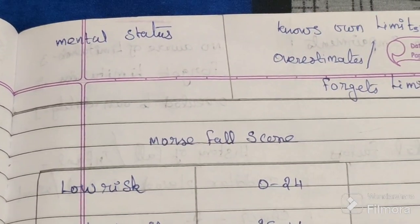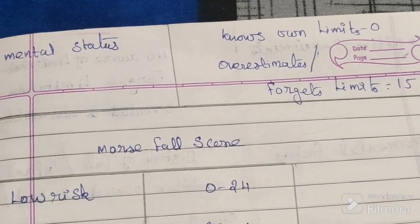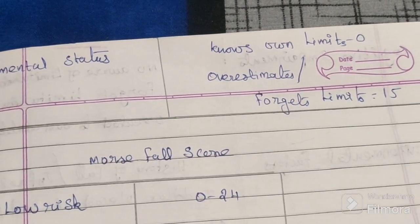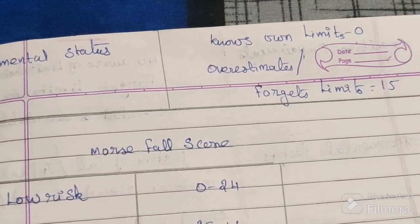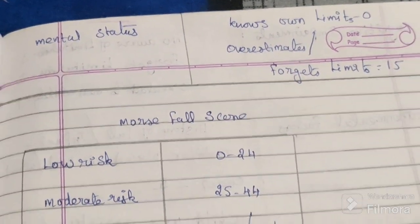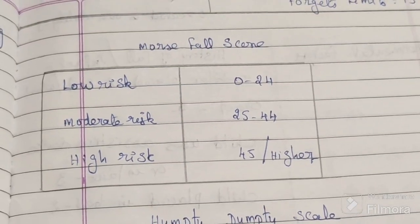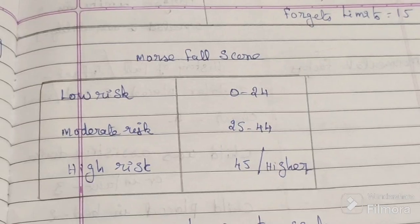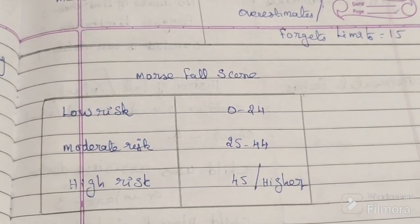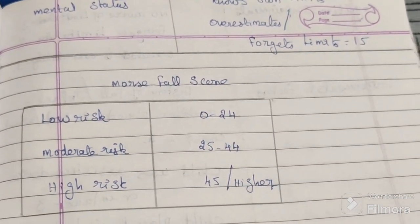The last variable is mental status. If your patient knows their own limits, give a score of 0. If they overestimate or forget their limits, give a score of 15. According to your patient's condition, give the appropriate score. If the total score is between 0 and 24, the patient is at low risk of fall. If the total score is 45 or higher, the patient is at high risk of fall.